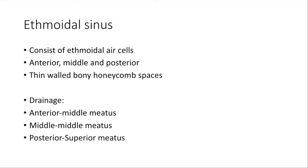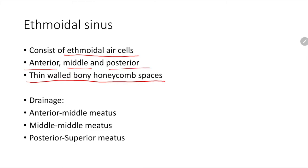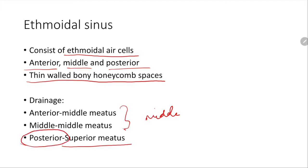The ethmoidal sinus is a flat bone found at the roof of the nose with a cribriform plate — a thin-walled, bony, honeycomb-like structure with many small holes. It consists of ethmoidal air cells divided into anterior, middle, and posterior groups. The anterior and middle ethmoidal air cells drain into the middle meatus, but the posterior ethmoidal air cells drain into the superior meatus. This gives us the answer: the posterior ethmoidal sinus does not drain into the middle meatus — it drains into the superior meatus.